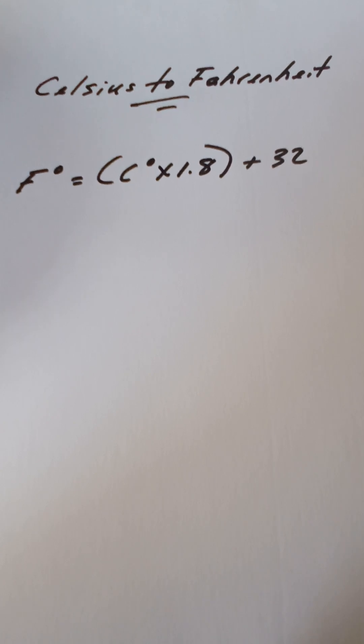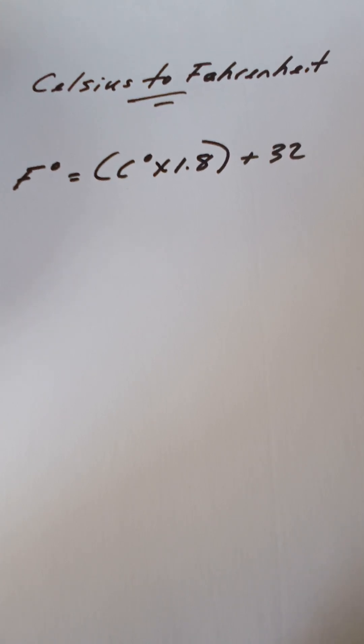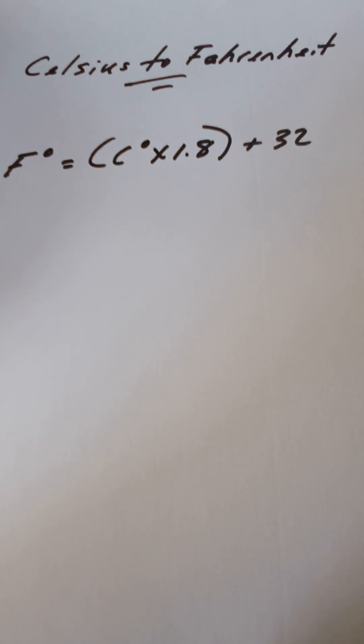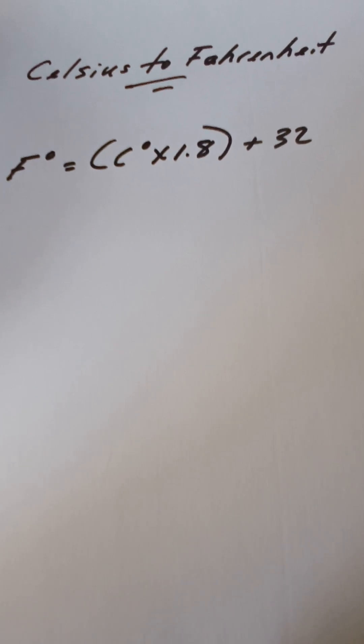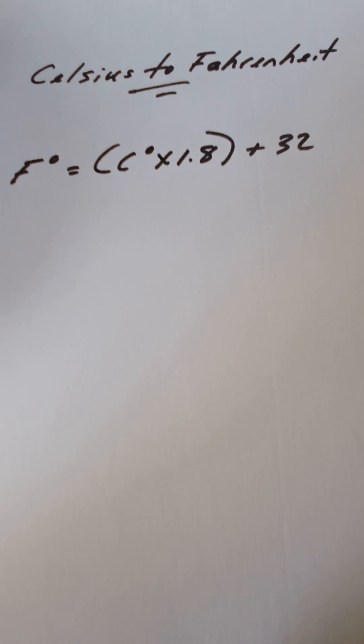...1.8, plus 32. So just take the Celsius value, multiply by 1.8, and add 32 to get your Fahrenheit temperature. To summarize: Fahrenheit equals Celsius times 1.8 plus 32. That's how you convert Celsius to Fahrenheit. Thank you.